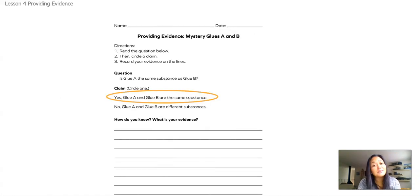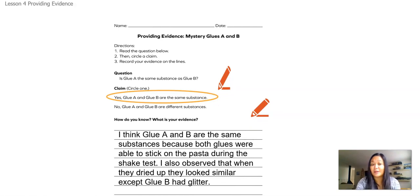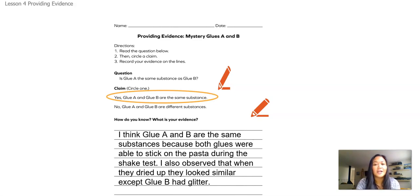I wonder what you thought. This is what I did. I first circled that yes, I thought glue A and B are the same substance. Then the next part, remember, was to provide our evidence — how did we know that? Here's what I wrote: I think glue A and B are the same substances because both glues were able to stick on the pasta during the shape test. I also observed that when they dried up, they looked similar, except glue B had glitter.